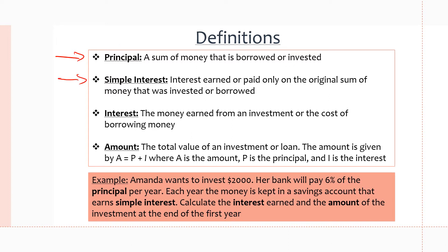Simple interest is the interest earned or paid depending on whether you are investing or borrowing. If you're borrowing, you pay interest only on the original amount of money invested or borrowed — the principal. With simple interest, we only take a fraction of the beginning value. That fraction depends on the interest rate, and we keep adding this fraction to the total amount, usually each year, depending on the terms of the investment.